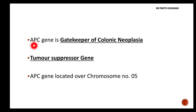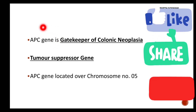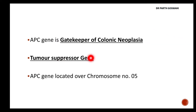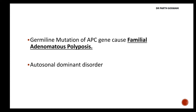The full name of this gene is adenomatous polyposis coli gene. It is located on chromosome number five and is known as the gatekeeper of colonic neoplasia. If this gene is mutated, you can develop colon cancer. It is one of the tumor suppressor genes, and this particular gene will down-regulate your growth-promoting signal, inhibiting proliferation and preventing cancer formation.